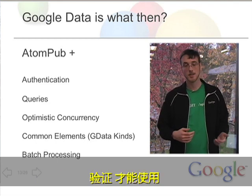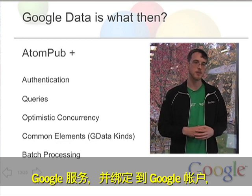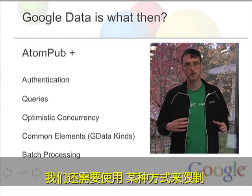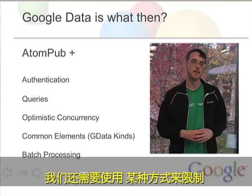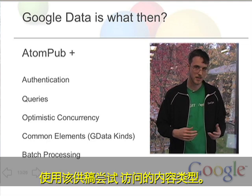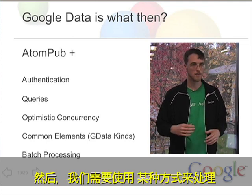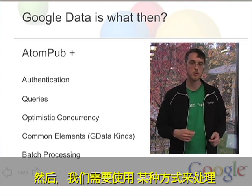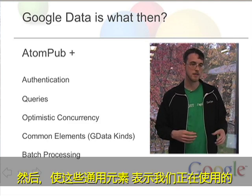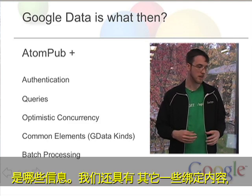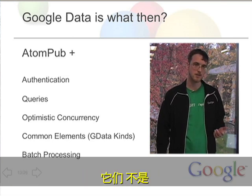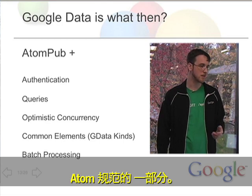As I already mentioned, there is some form of authentication that we need in order to work with Google services and tie into Google accounts. We also have some way of restricting what kinds of content you are trying to access using this feed. And then we need some way to handle conflicts, just in case two people are trying to add the same information at the same time. We have common elements to express what this information is, and some other niceties not part of the Atom specification, such as batch processing and media support.